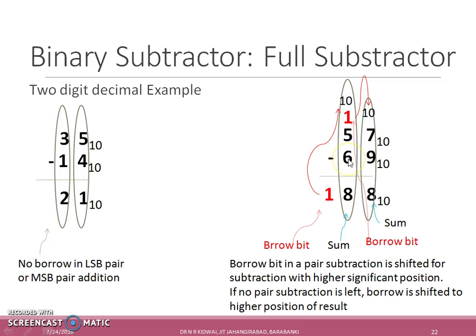That means 4 minus 6 is the next subtraction. Since the first number is lower than the second number, another borrow is required. That gives addition of 10. 10 minus 1 plus 5 minus 6 results as 8, and the borrow is marked since no further addition or subtraction is required.